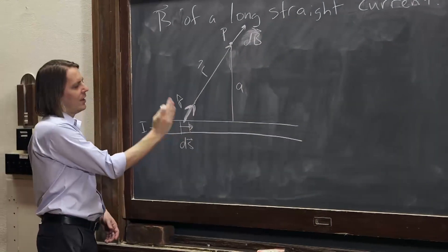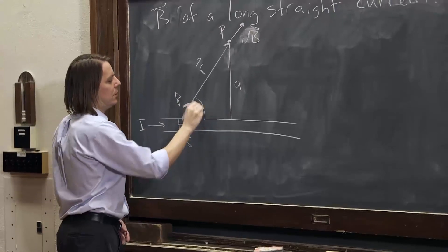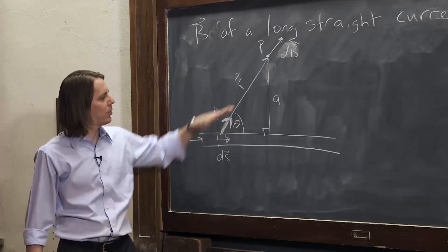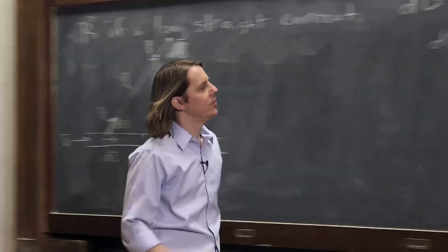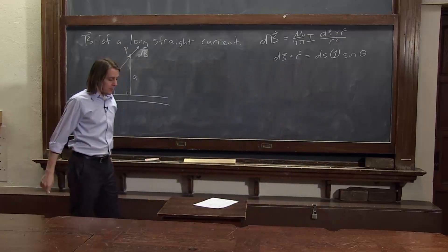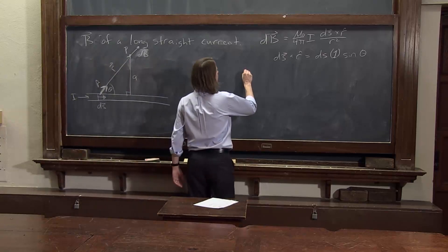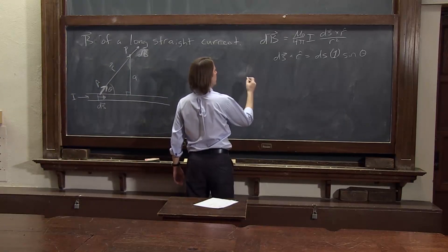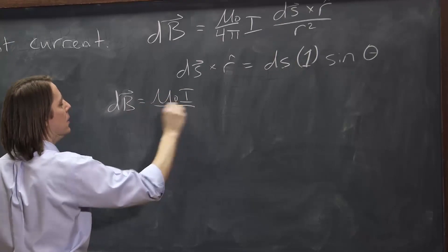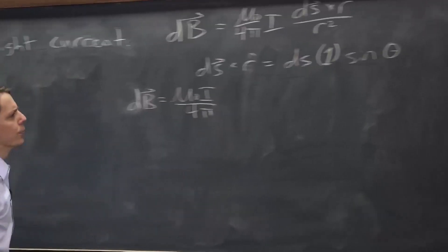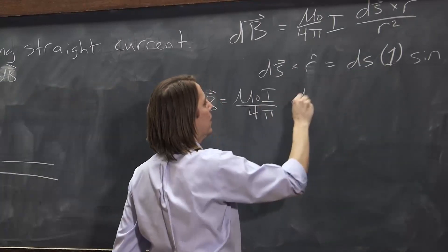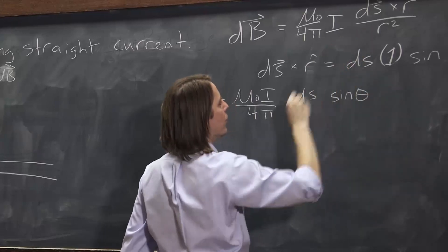Well, the angle between ds and r̂ is just going to be this angle of this right triangle. And you can see that'll be true anywhere we put ds along the wire. It's always going to make a right triangle. That angle will always be θ. So sine of θ. If we plug that in, then we get dB is μ₀I over 4π, and then we have ds sin θ over r².